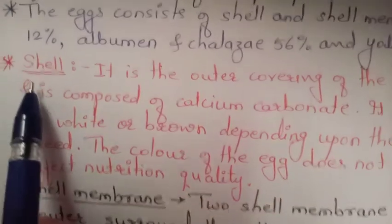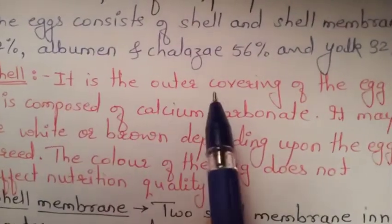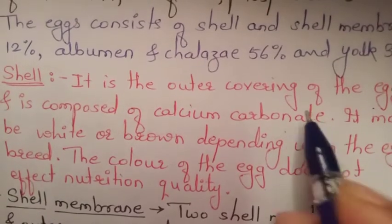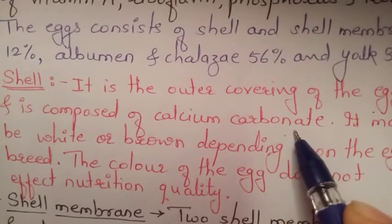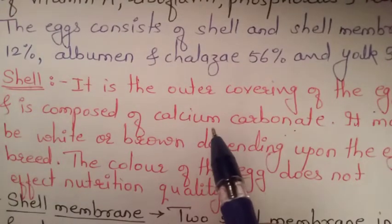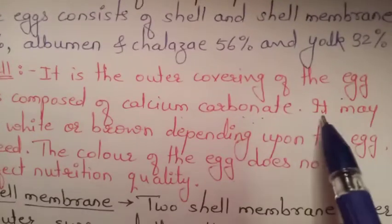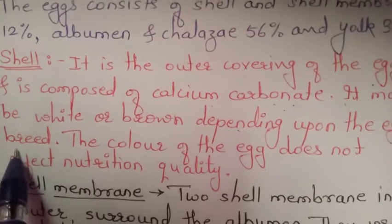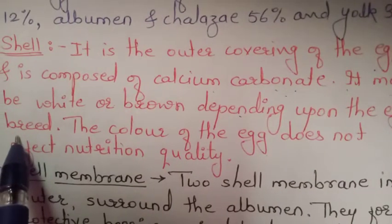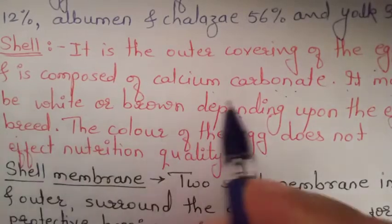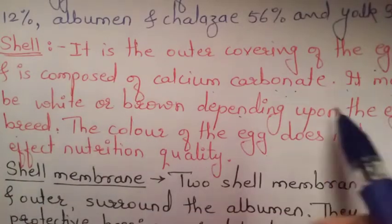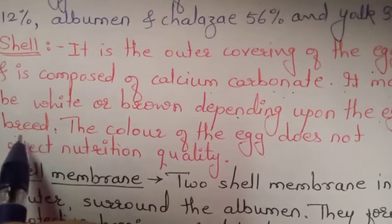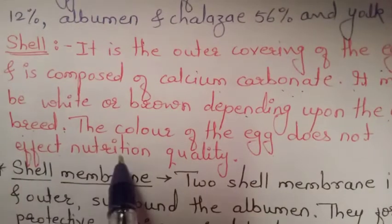First, the outer level — the shell. It is the outer covering of the egg and it is composed of calcium carbonate. The outermost brown line is known as the shell, made of calcium carbonate. It may be white or brown depending upon the egg breed. The color of the egg does not affect its nutritional quality.